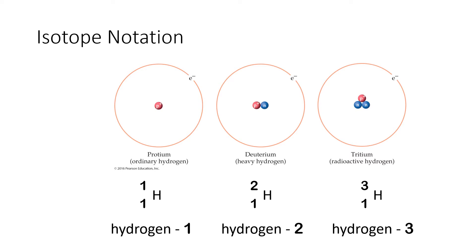When we're looking at these three isotopes, notice that in the first one on the far left there's only a single proton in the nucleus, but in the second isotope there's both a proton and a neutron, and then in the third isotope there are two neutrons and a proton. All three isotopes have just a single electron.